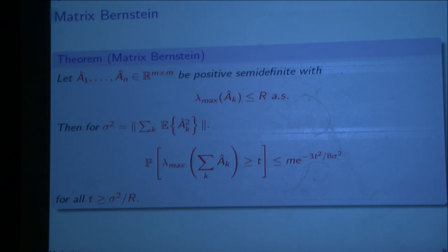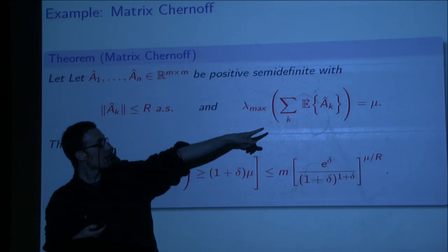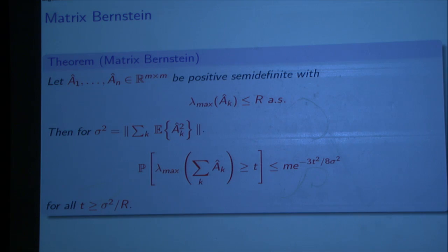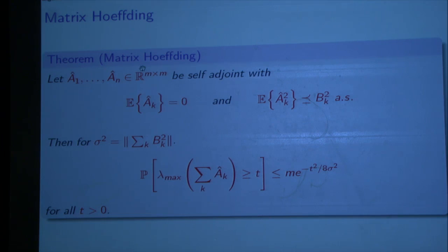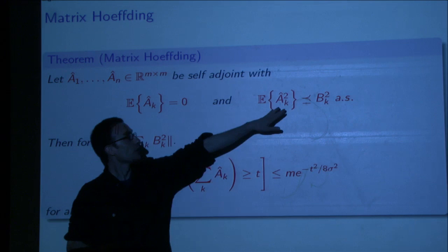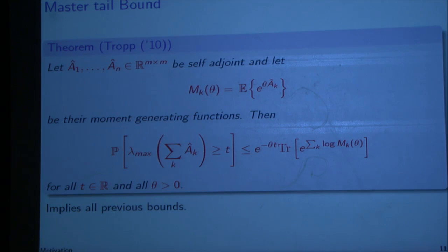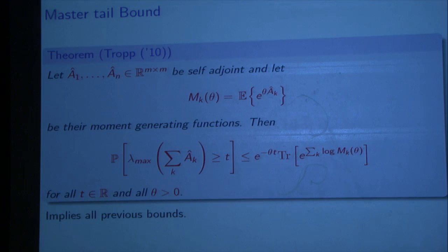Here's matrix Bernstein. Instead of having lambda max of the sum of the expected matrices, we have the operator norm of the sum of the expected squared matrices. You get some exponential bound, but there's this m again. And here's matrix Hoeffding, where you have some upper bound on what the squared matrices are in the positive semi-definite order — and again, you have this m. There's a master tail bound which implies all the previous bounds, and the m is there too.